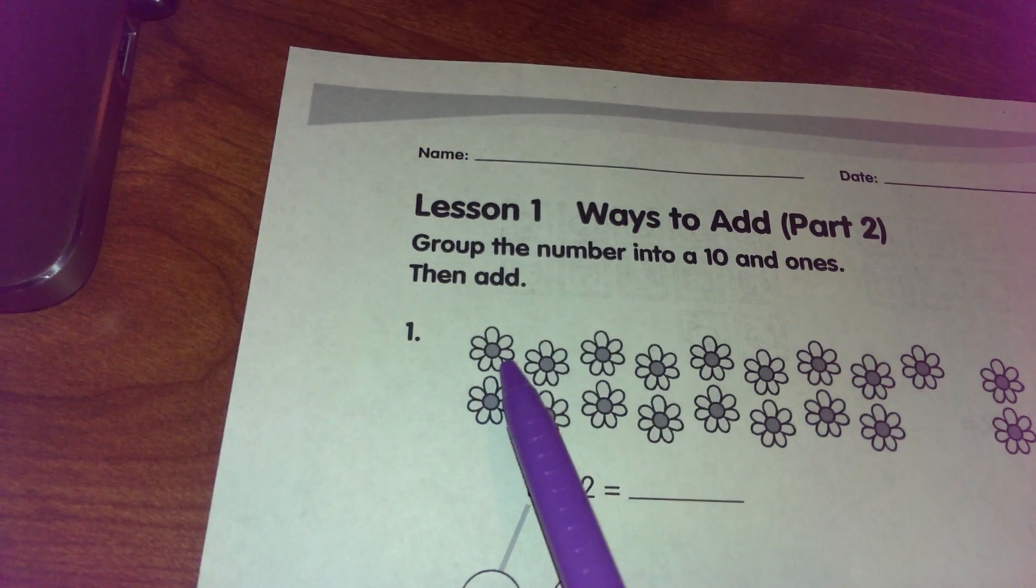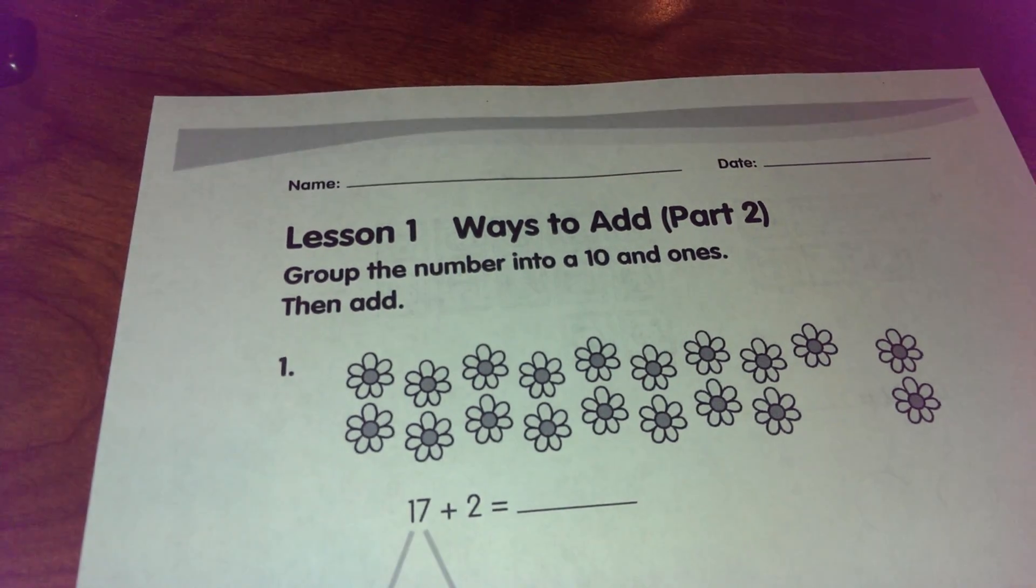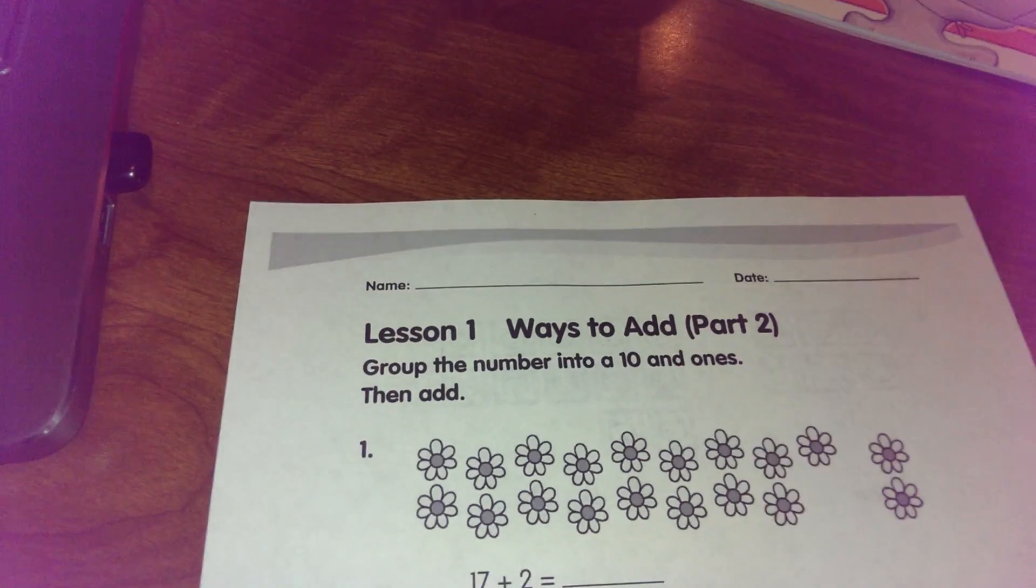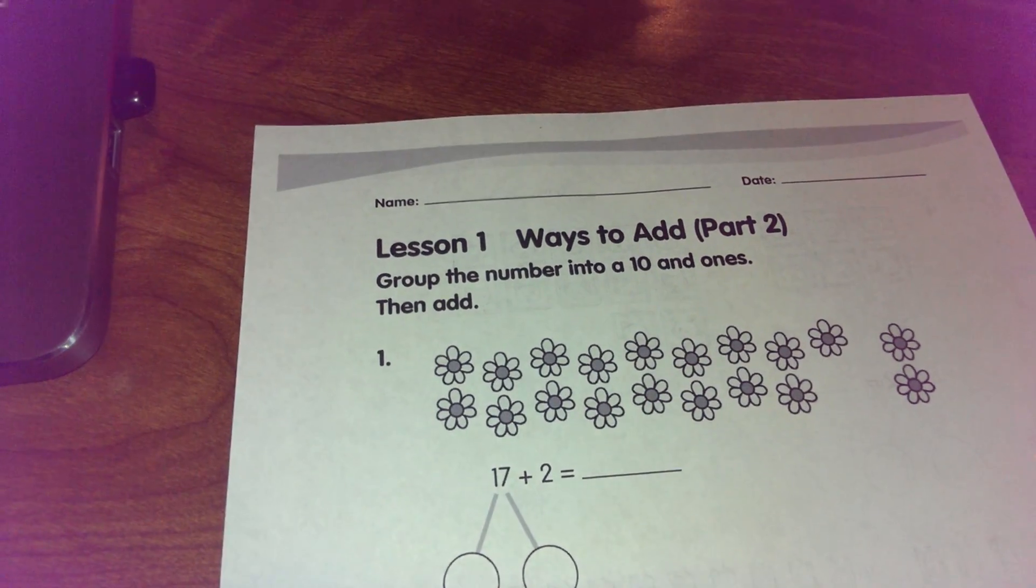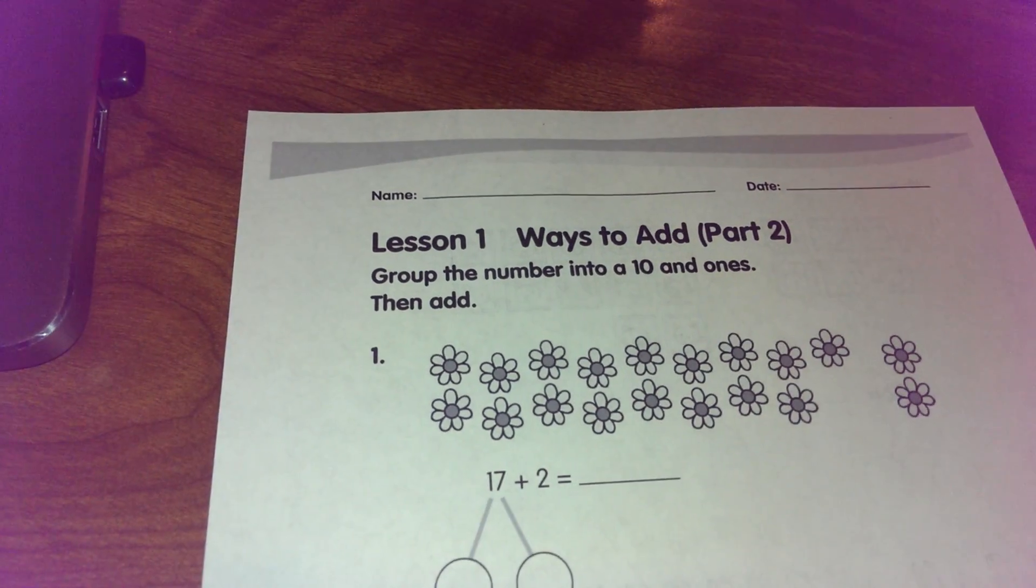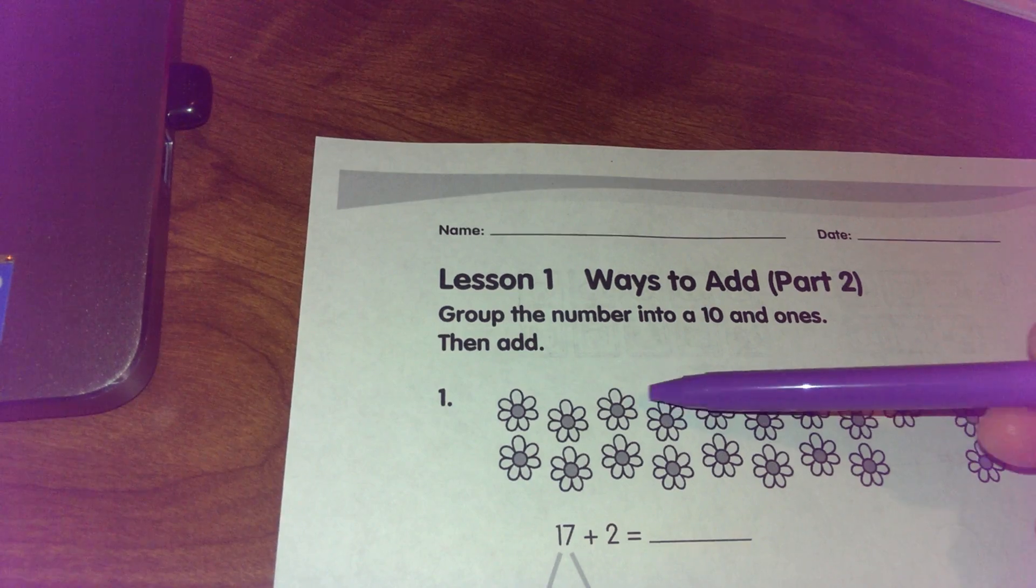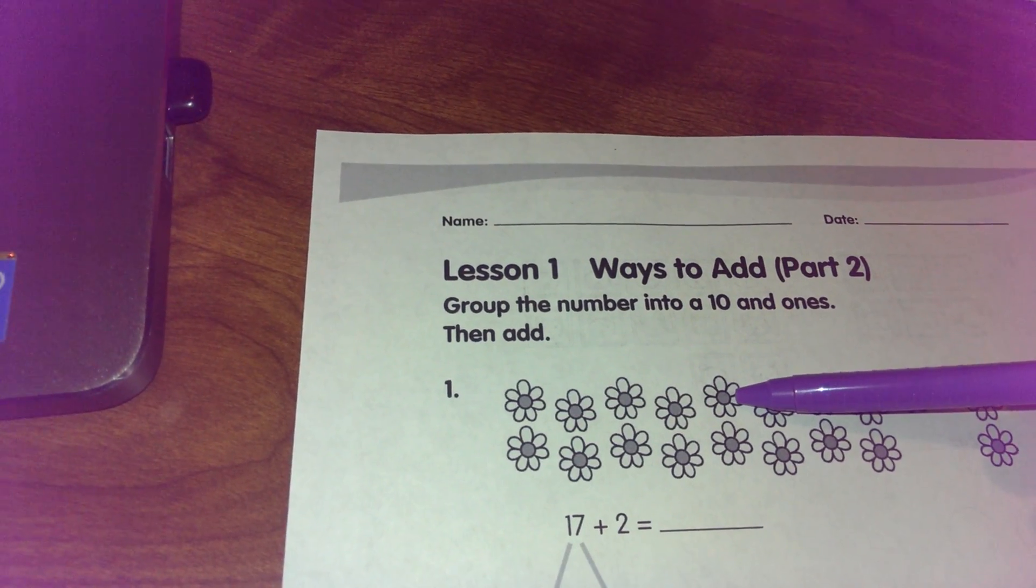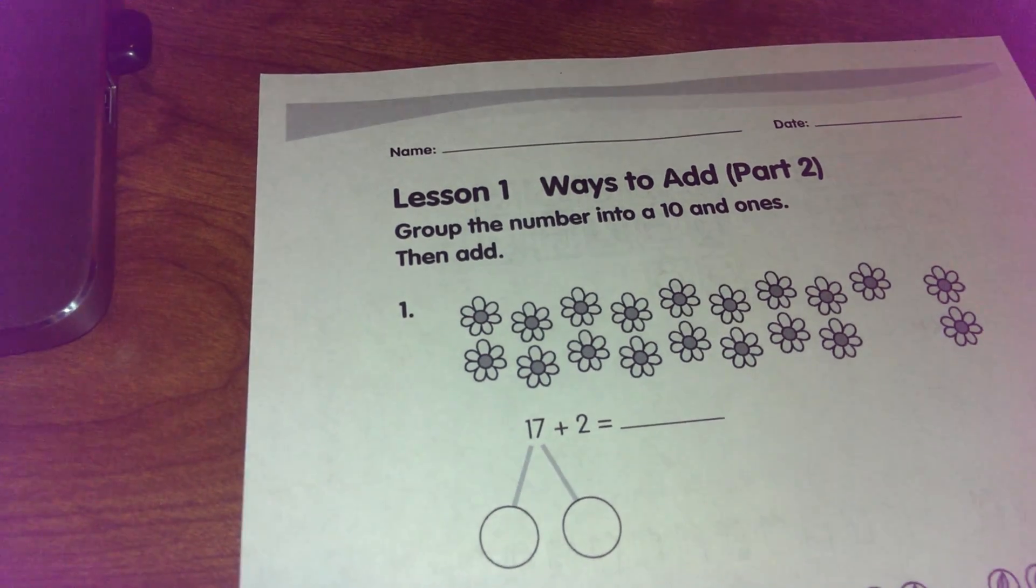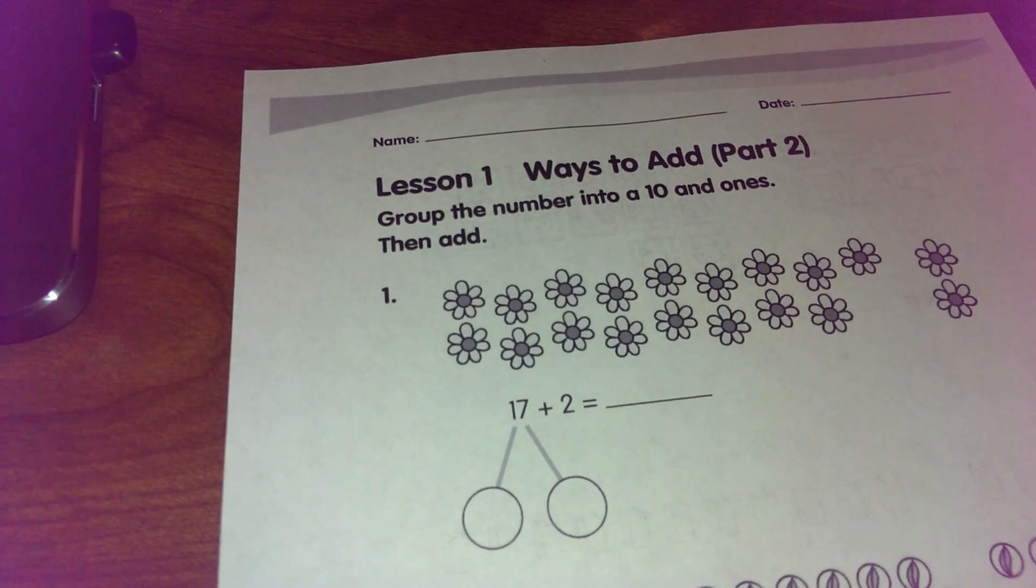Instead of counting every single flower, I'm going to make things easy by grouping a ten. So I look at the flowers and I can see one, two, three, four, five at the top and one, two, three, four, five at the bottom. So I know that five and five is ten. I'm going to put those together.